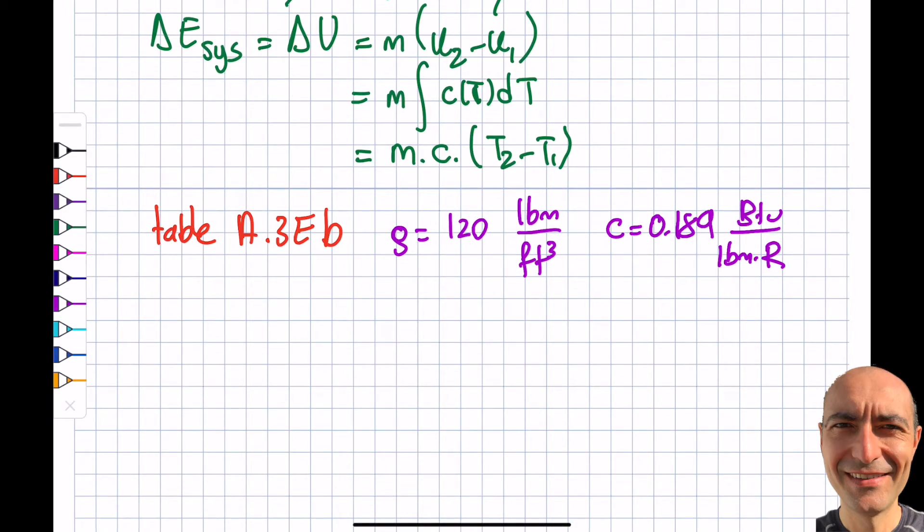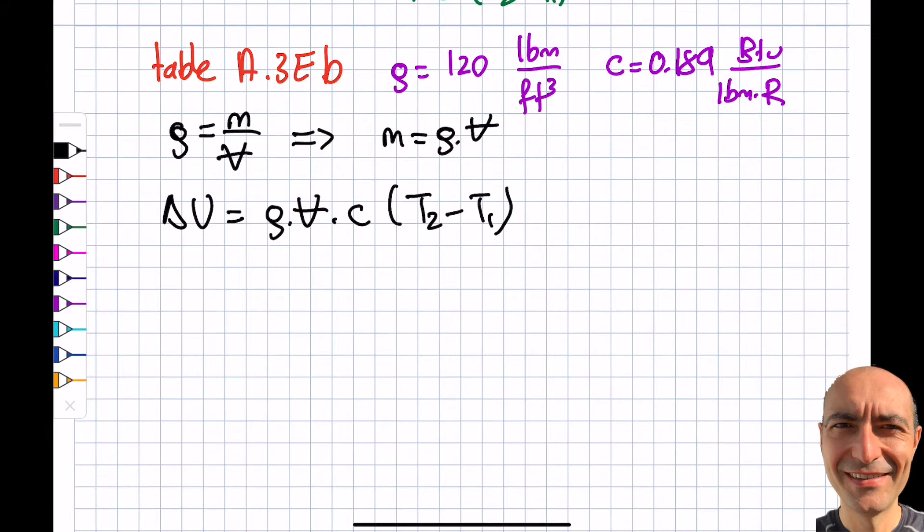I said, by the way, this is density. So the density is mass divided by volume. From here you can see that the mass will be density times the volume. So delta U will be N, which is rho, times volume, times C, times T2 minus T1. Rho is 120. Let's look at units because I want to ensure that I'm getting BTU at the end, feet cube. Volume. It says 2 by 4 by 8 inches.